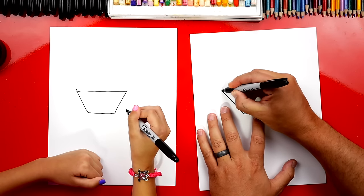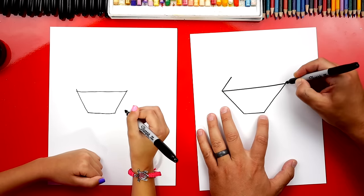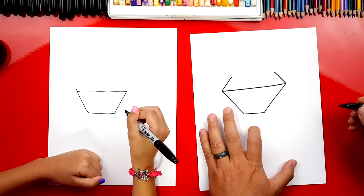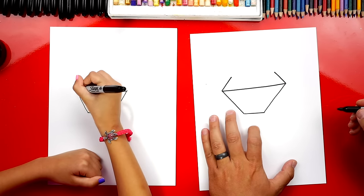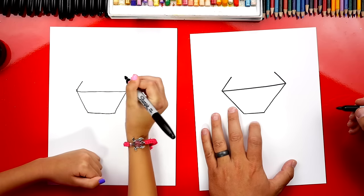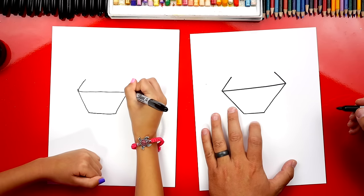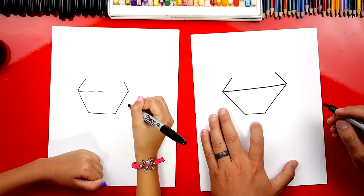Now we're going to draw the top of our diamond. We're going to draw shorter lines coming in on both sides. Yeah, you got it. Good. And then another one.